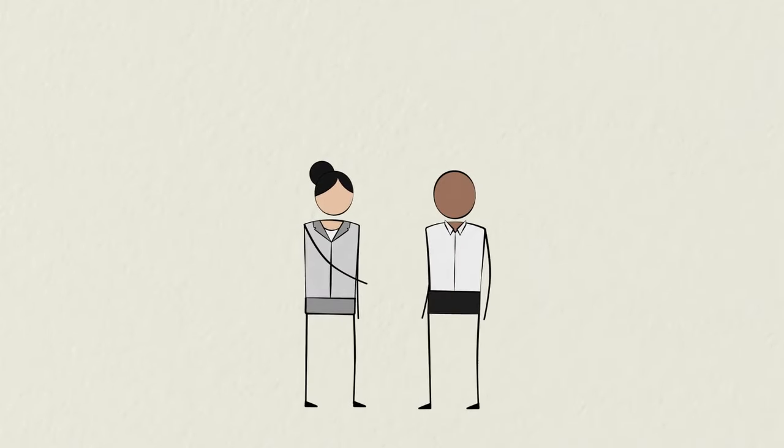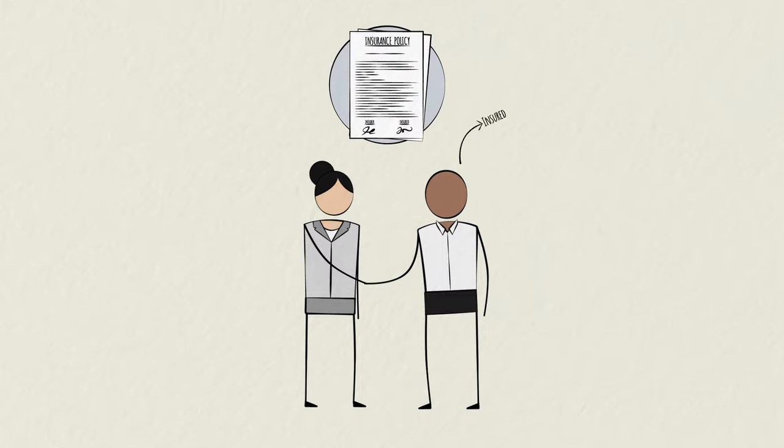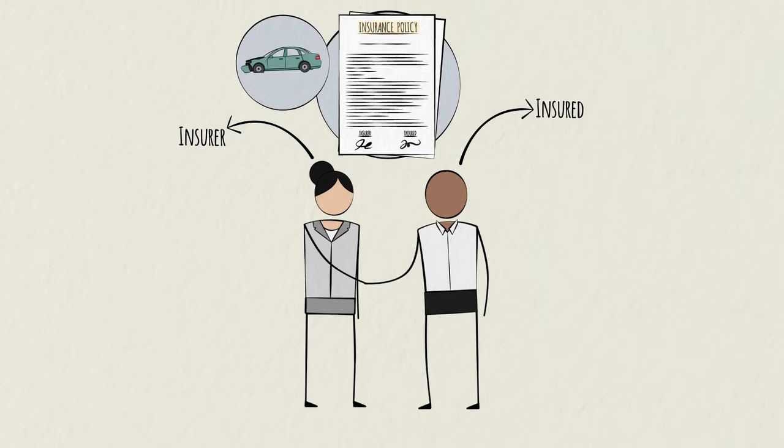In insurance, the product is a promise. This promise is detailed in a contract between the insured and the insurer called a policy, which defines which risks are included and excluded and what amounts will be paid if the risk event occurs.